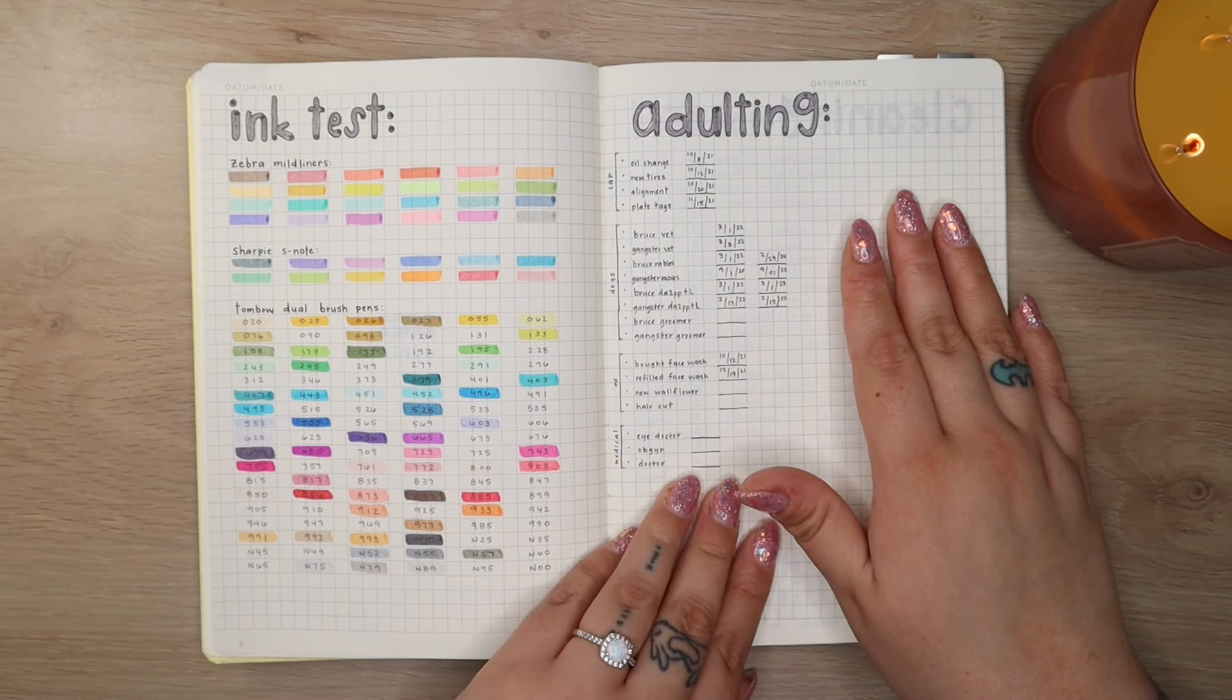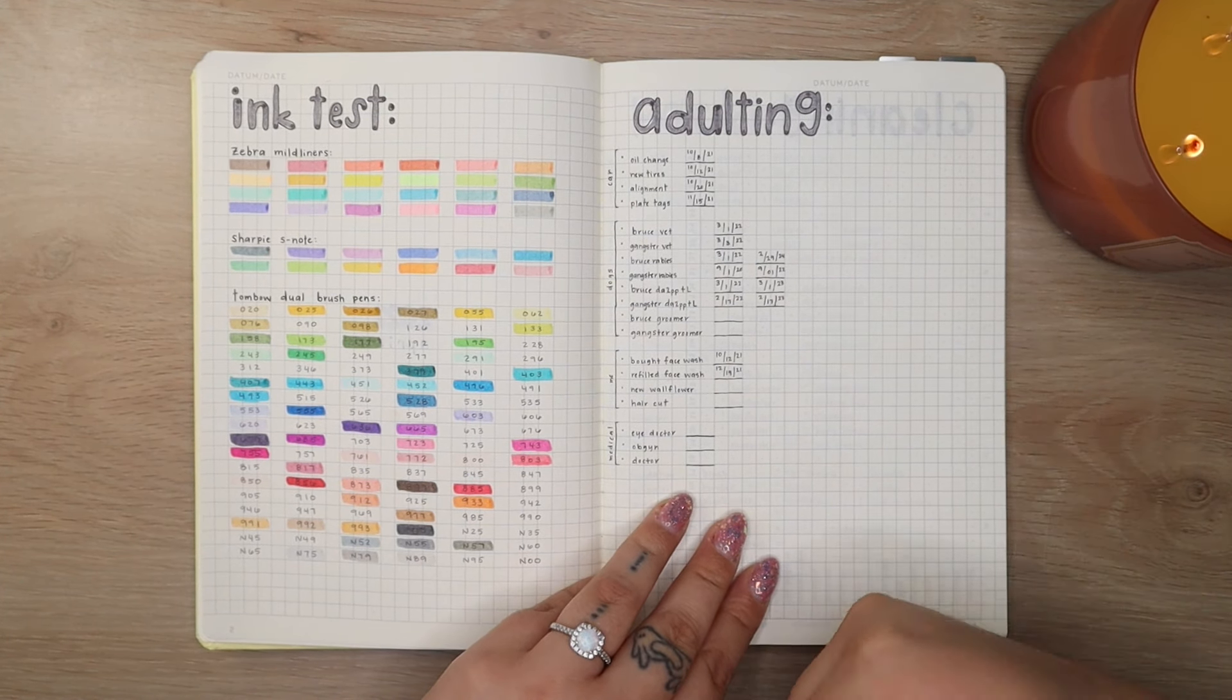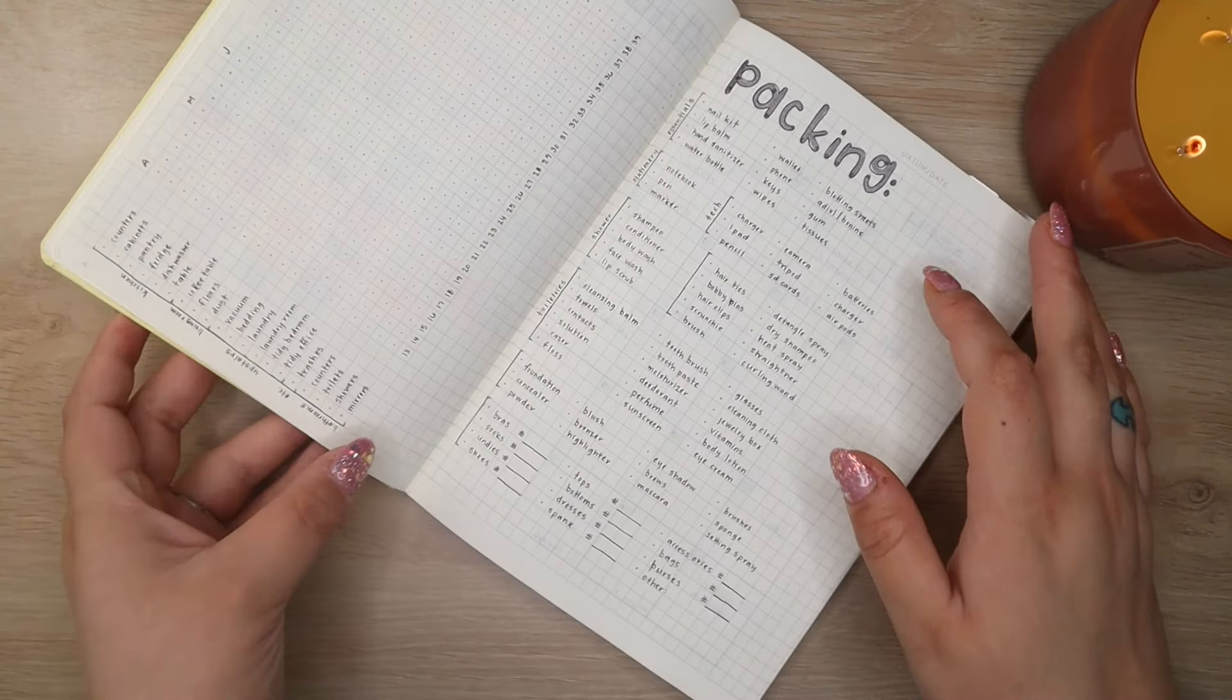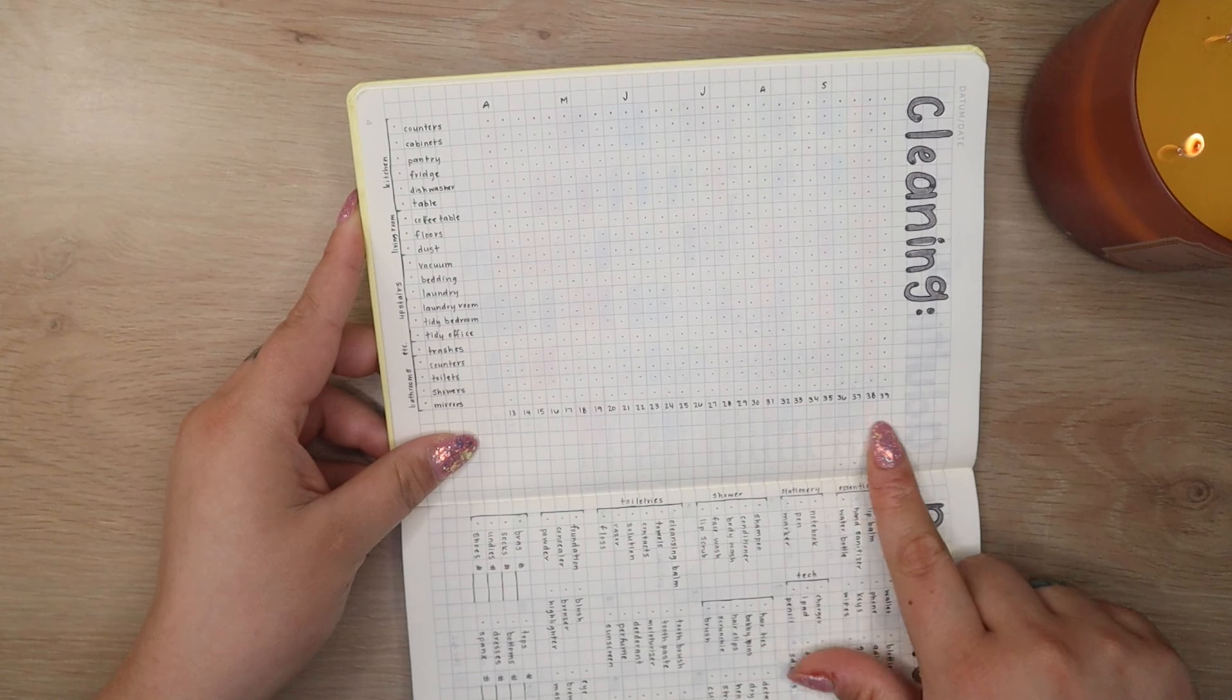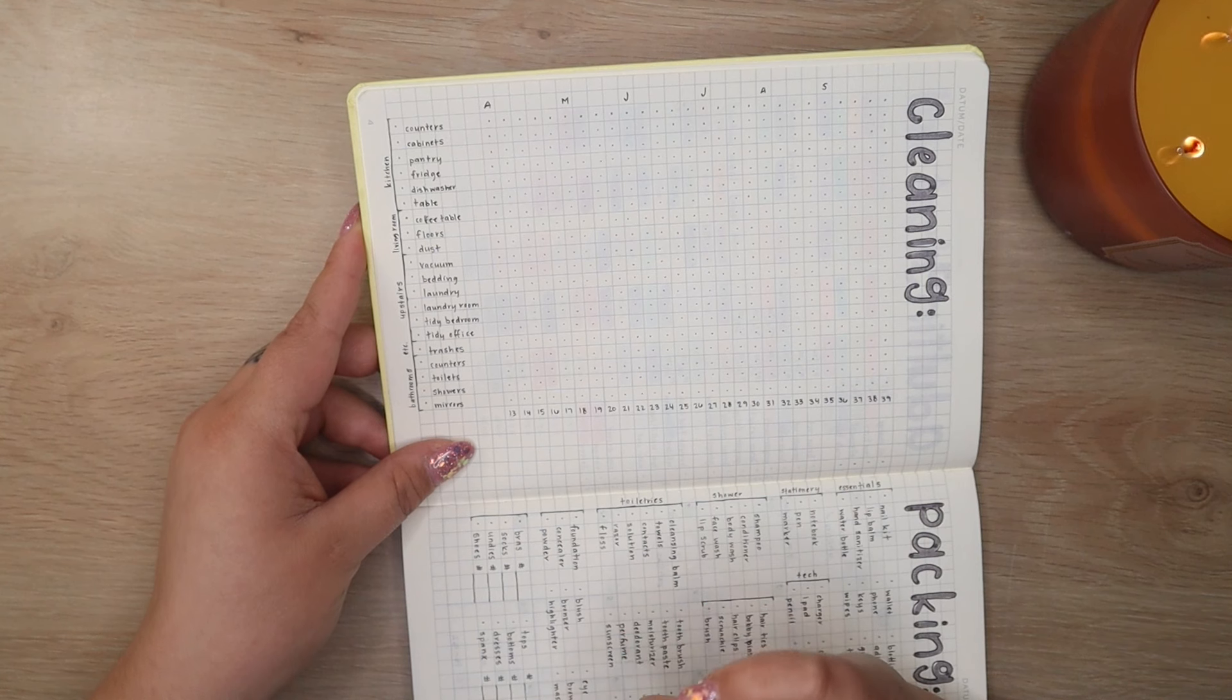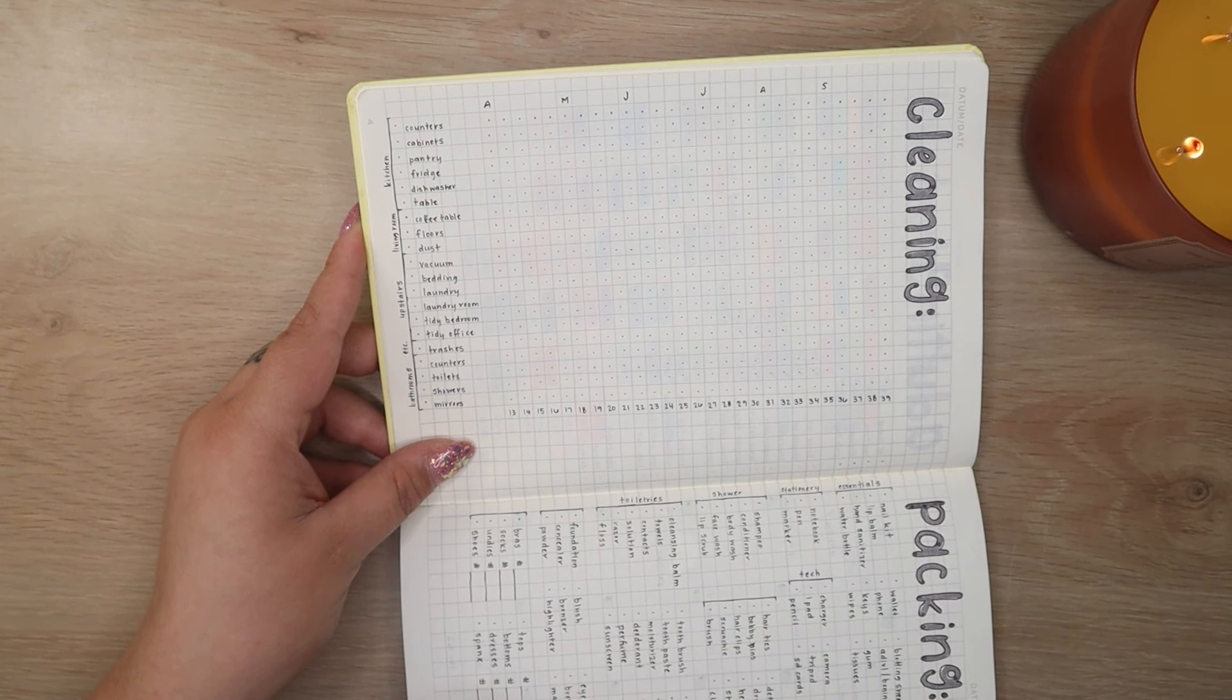I also have an adulting page so this is just things like when was the last time I got my oil changed, got new tires, got vaccines for the dogs, went to the doctor for me, refilled my wallflower. You know just like random things that I want to keep track of. I also have a cleaning tracker. I have it going this way so that I could fit April to the end of September and these are all just things that I want to get done every single week. So just like you know cleaning the bathrooms and everything that that entails. The kitchen, the living room, upstairs, all that.